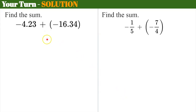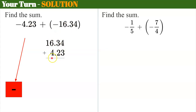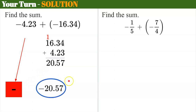Welcome back. Let's check your work. Same sign — I'm going to note that my sum is going to be negative. I'll put 16.34 on top and 4.23 below, lining up the decimal point, and add. Four plus three is seven. Three plus two is five. Bring down the decimal point. Six plus four is ten, so zero and carry the one. One plus one is two. Don't forget it is negative — your sum is negative 20.57.